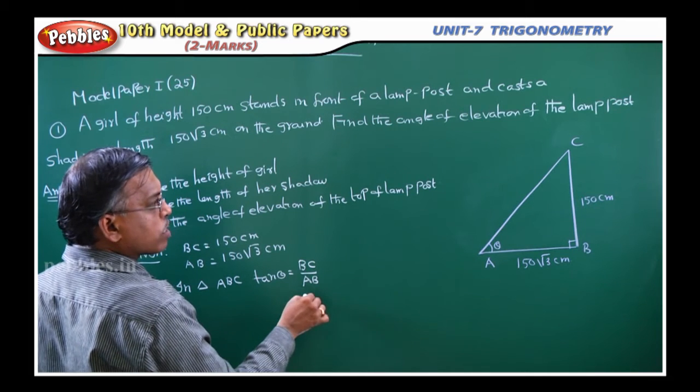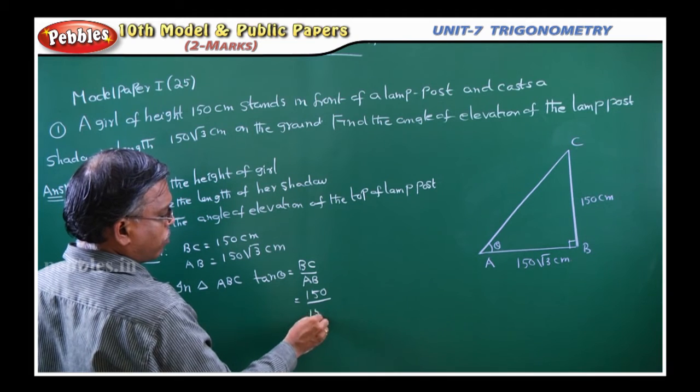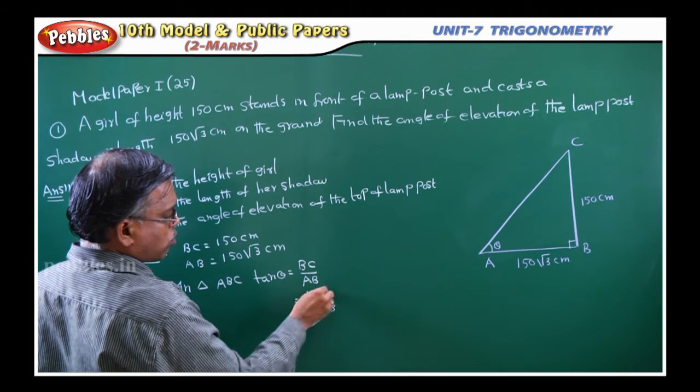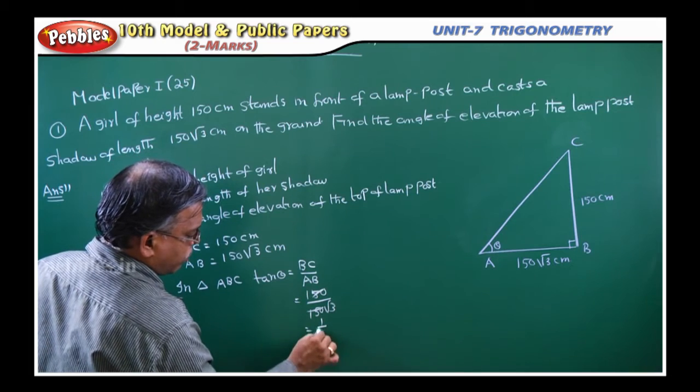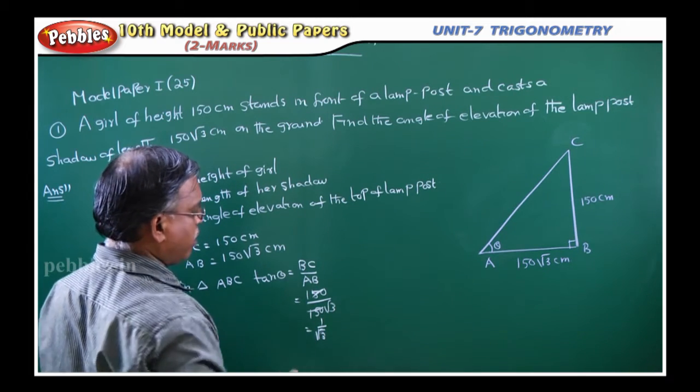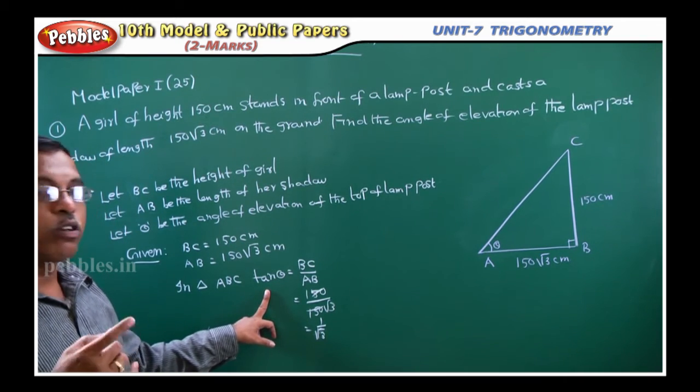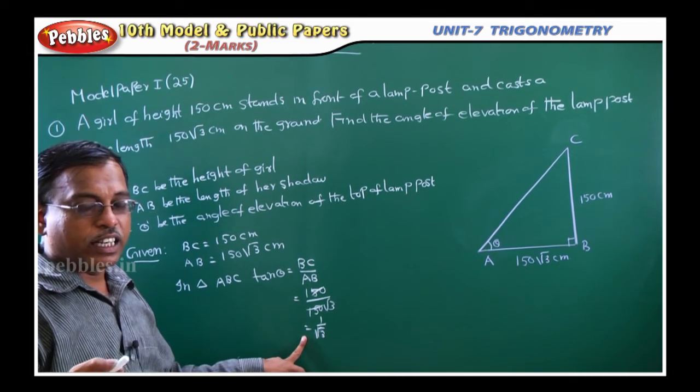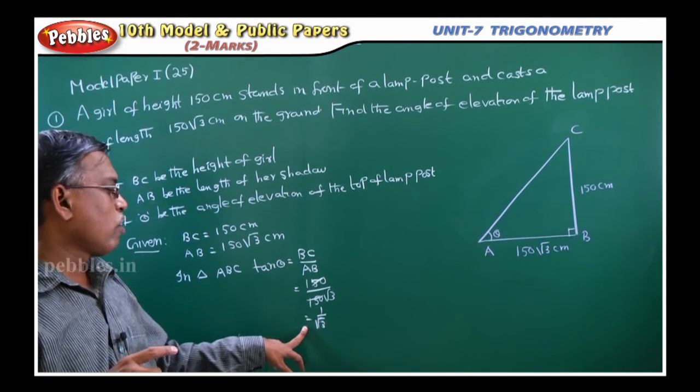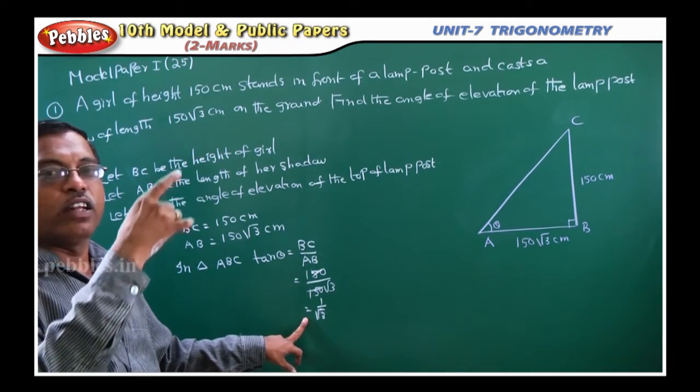Now tan theta, opposite side BC, adjacent side AB. So that is equal to, what is BC? 150. What is AB? 150 root 3. These two cancel, 1 by root 3. So if tan theta equals 1 by root 3, for what value of theta is it 1 by root 3? That is 30 degrees, because tan 30 is 1 by root 3, tan 45 is 1, tan 60 is root 3. So you have to see the trigonometric values table.